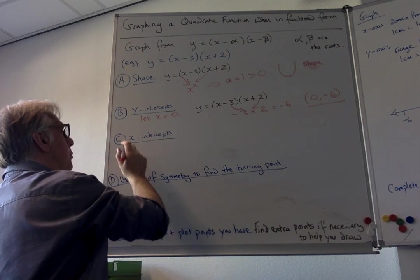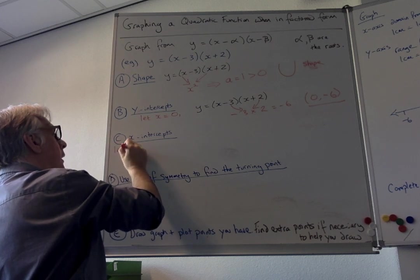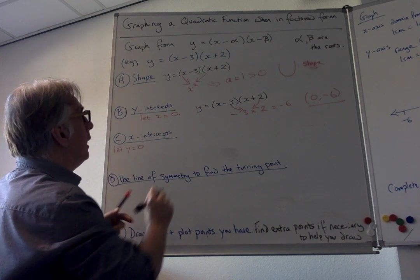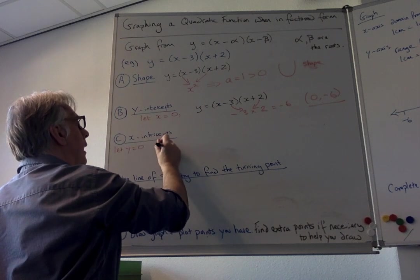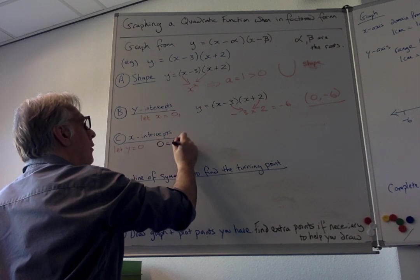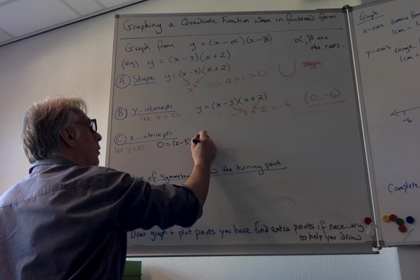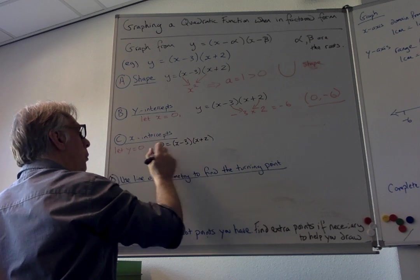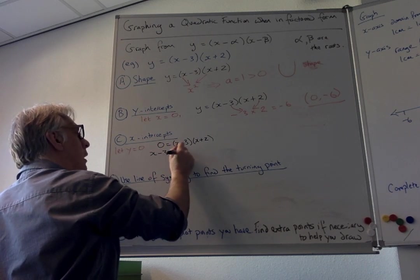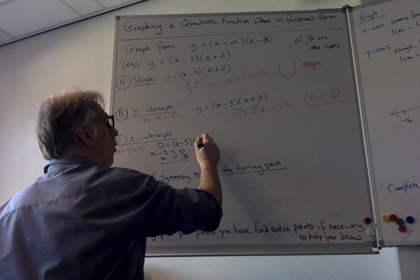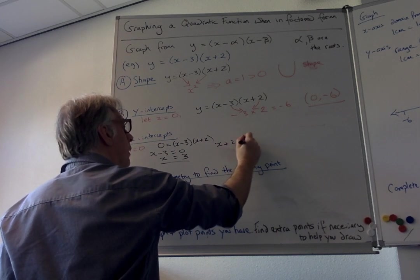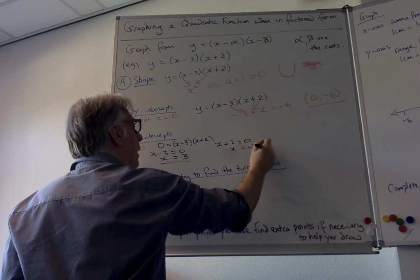To find the x-intercepts, we let y equal 0. If I do that in this equation I get 0 equals x minus 3 times x plus 2. From here we can separate these: x minus 3 equals 0 so x equals 3, or x plus 2 equals 0 which makes that minus 2.